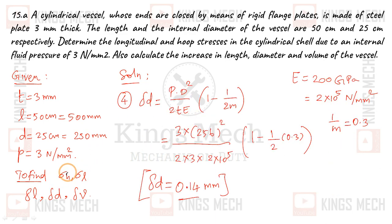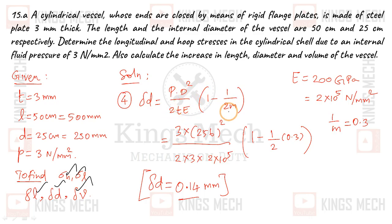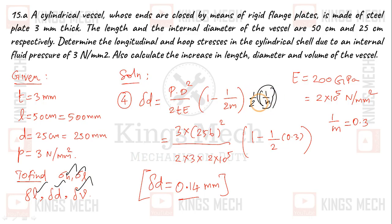Next we find δL, δd, and δV. The change in diameter δd is equal to PD² / (2tE) × (1 − 1/(2m)), where 1/m is the Poisson's ratio. So δd = PD² / (2tE) × (1 − ν/2).